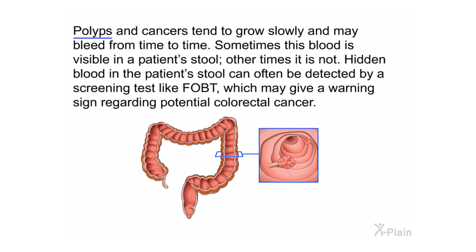Polyps and cancers tend to grow slowly and may bleed from time to time. Sometimes this blood is visible in a patient's stool; other times it is not. Hidden blood in the patient's stool can often be detected by a screening test like FOBT, which may give a warning sign regarding potential colorectal cancer.